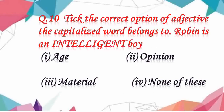Question number 10: tick the correct option of adjective — identify what category the capitalized word belongs to in the sentence 'Robin is an intelligent boss.' An adjective describes the quality and state of being of a noun. Here, intelligent is describing Robin's quality and nature. So the right answer will be option 2, opinion.